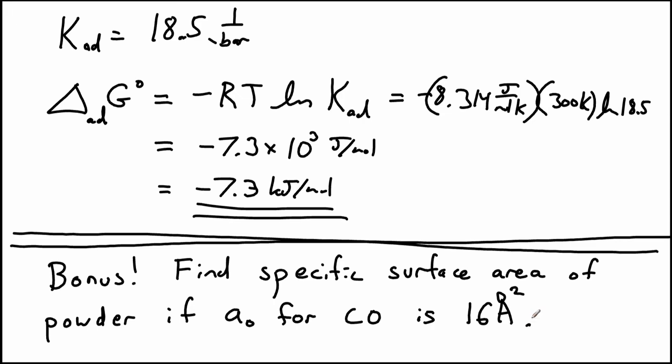Using the same data set, we can get an additional parameter. We can find out how much area is available for adsorption on the surface of this powder. So it doesn't actually give us the total surface area of the powder. It just gives us the surface area of the powder, that portion of the surface area of the powder that's available for adsorption for CO. So we can call it the active surface area. So the specific surface area is just going to be something that's meters squared per grams. So how much area do you get on your powder for a specific mass of powder?